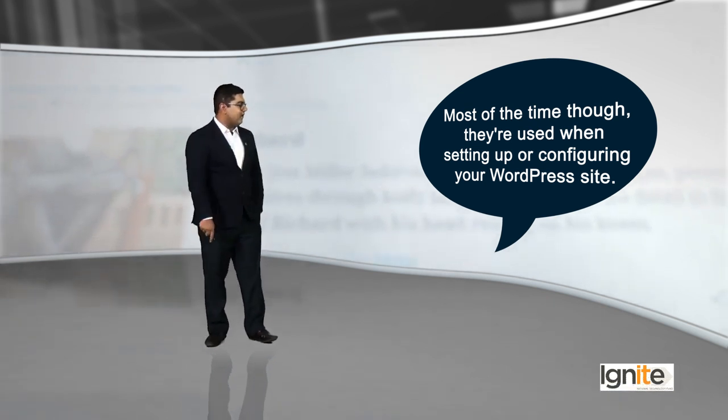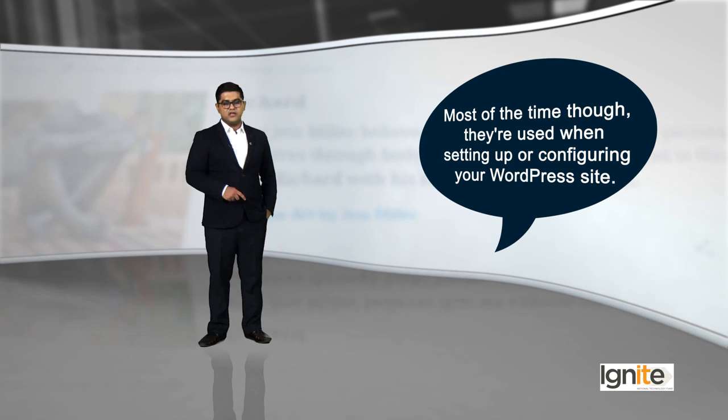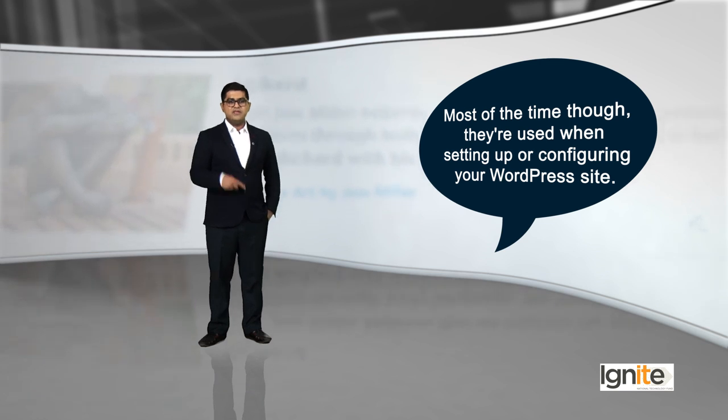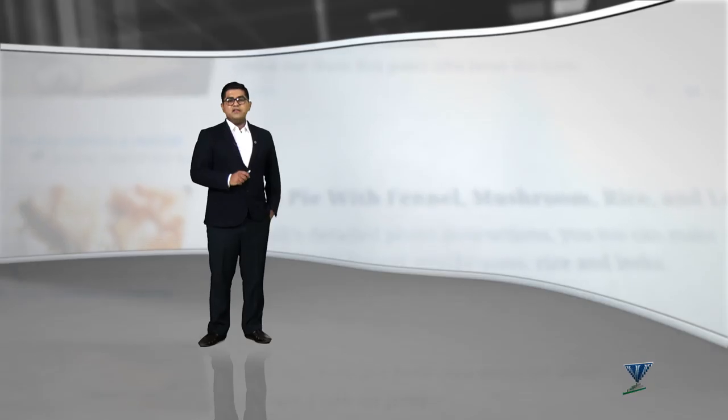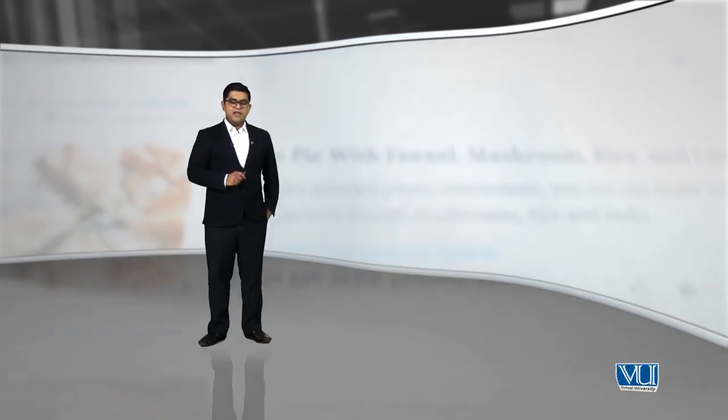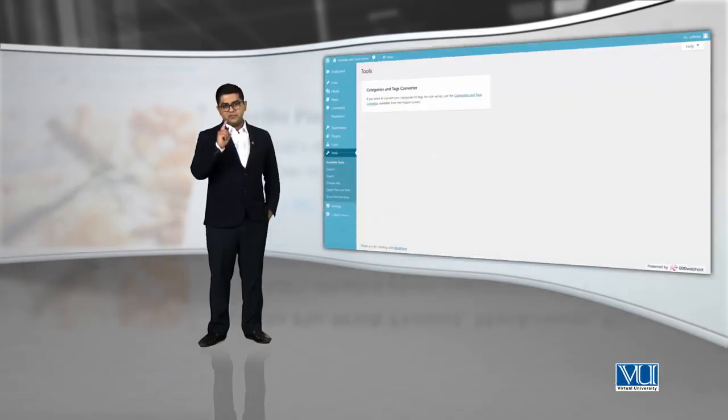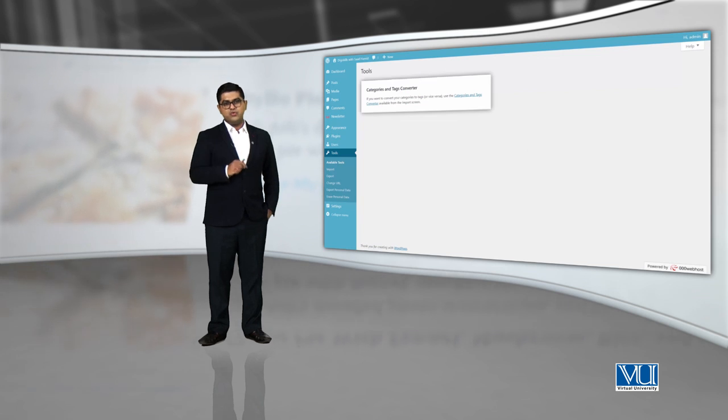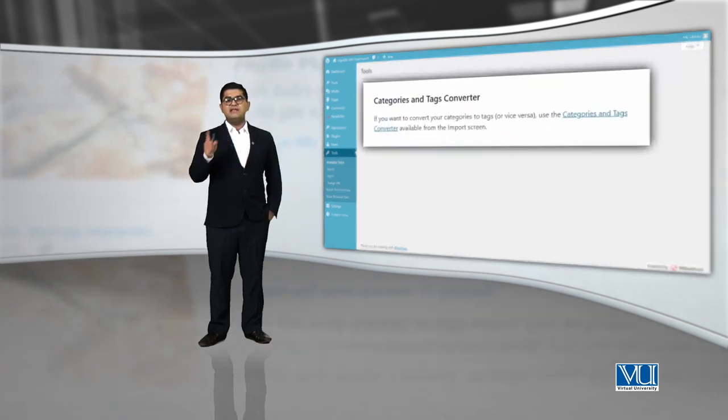Is ki ek example yeh hai: ki agar aap kisi bhi tarah ka demo content install karna chahein, that's where you will be using a lot of the tools. Abhi jab aap WordPress install karenge ya tools ke section mein jayenge, toh aapko sirf ek tool nazar aa raha hoga: Categories and Tags Converter.